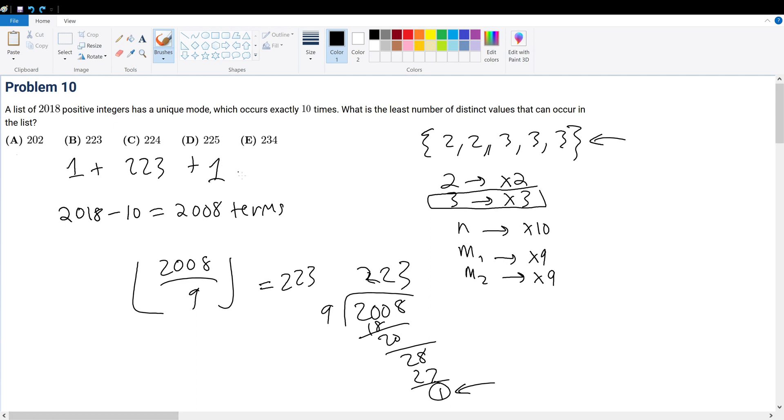And to verify whether or not you did it right, you have to understand how many total terms do we have from this expression? Well, we have 1 times 10, plus 223 times 9 plus 1. This should give me 2,018, which let's see if it does.